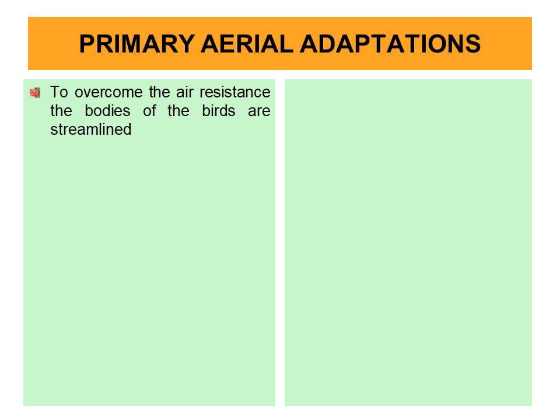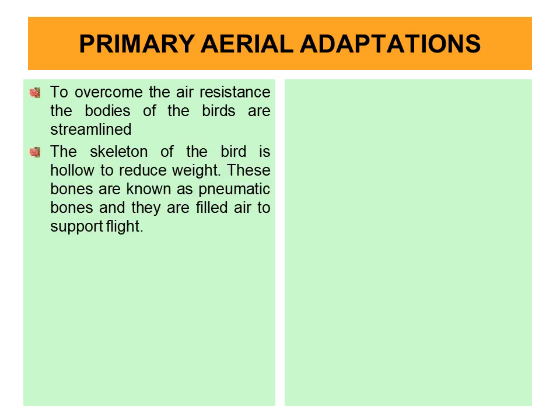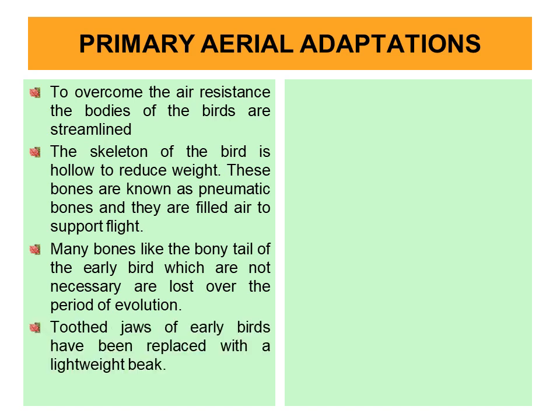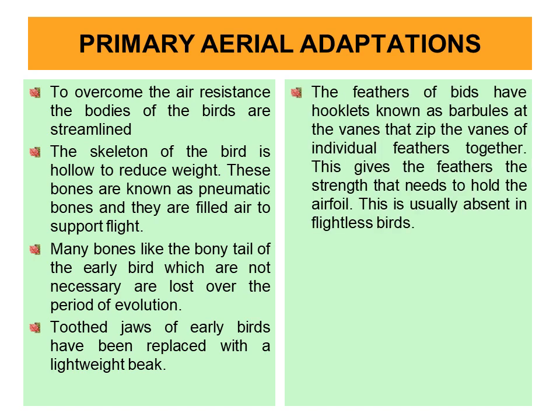Coming to primary aerial adaptations: to overcome air resistance, the bodies of birds are streamlined. The skeleton of birds is hollow to reduce weight. Their bones are pneumatic and are filled with air to support flight. Many bones, like the bony tail of early birds which were not necessary, are lost over the period of evolution. The tooth jaw of early birds has been replaced with a lightweight beak.